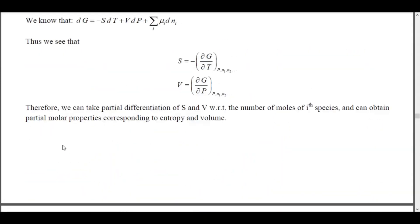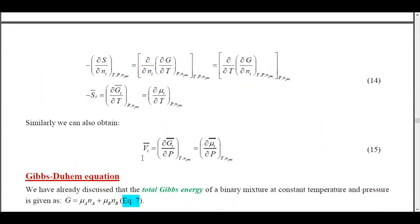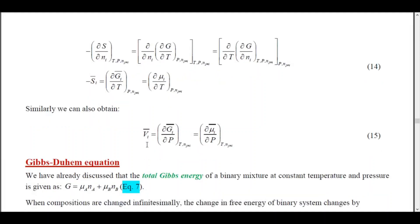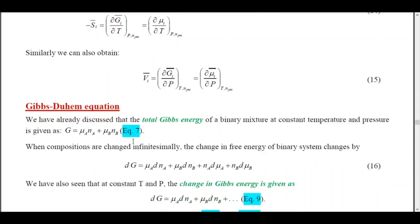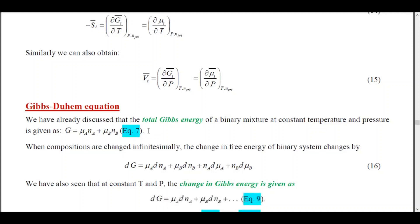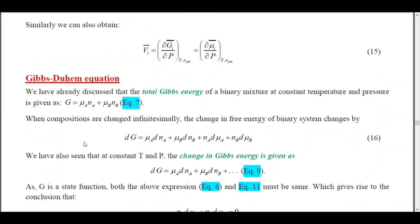Similarly, differentiating the volume expression gives a relation between chemical potential and partial molar volume of the ith species. Now going to the Gibbs-Duhem equation: in the last lecture, we discussed that for a binary system with components A and B, the total Gibbs energy is G = μ_A n_A + μ_B n_B, provided temperature and pressure remain constant. For an infinitesimal change, differentiating gives equation 16.